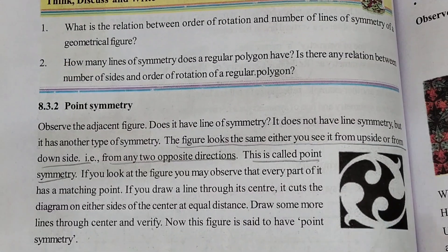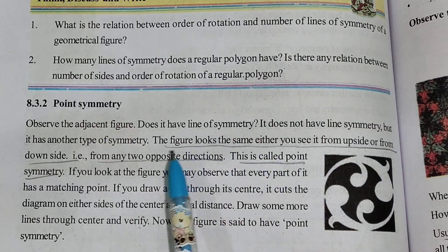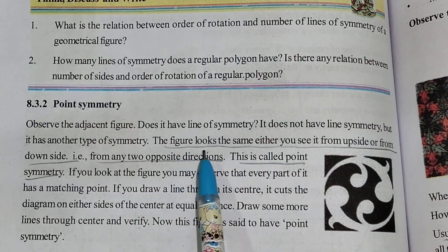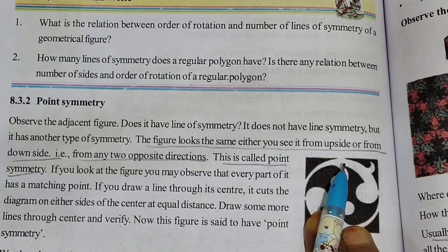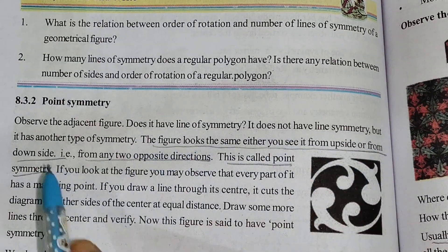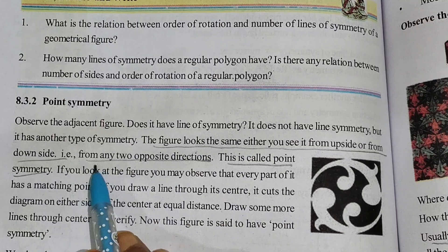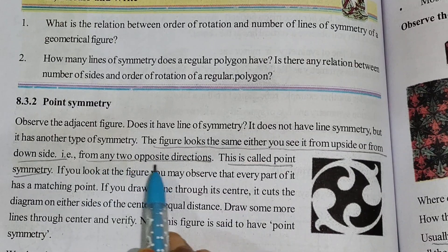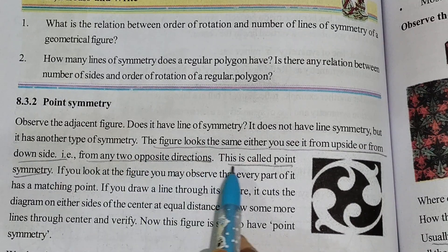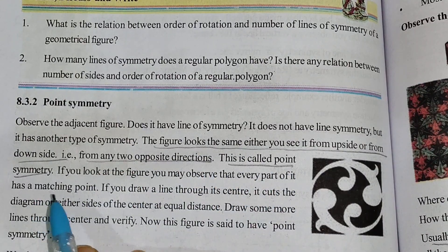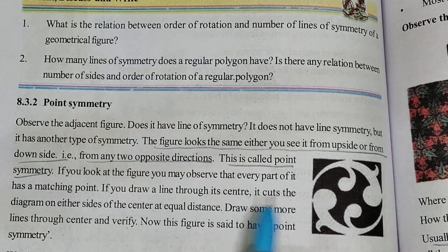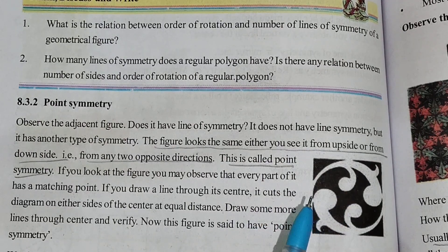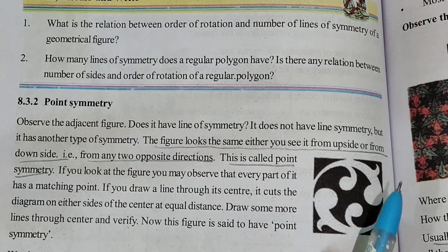Next is point symmetry. Point symmetry means the figure looks the same whether you see it from the upside or from the downside — from any two opposite directions. That is called point symmetry.